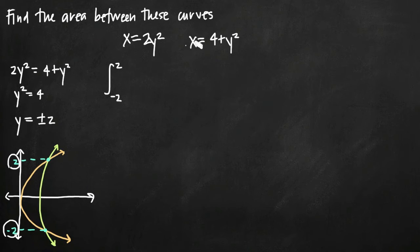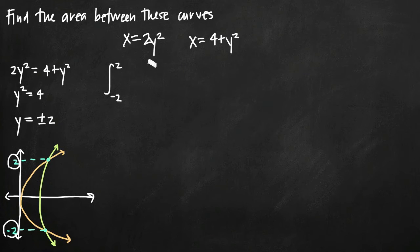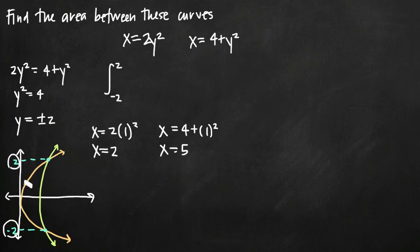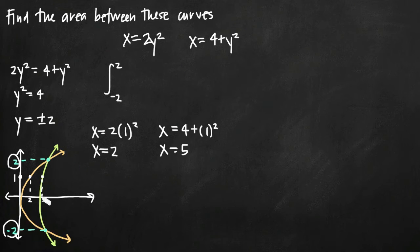We need to figure out which curve is which, and the way we'll do that is by taking any point between negative 2 and positive 2 and plugging it into both equations. Let's take positive 1 because it'll be easy. Plugging positive 1 into the first equation gives x equals 2 times 1 squared, which is x equals 2. For the other equation, plugging in 1 gives x equals 4 plus 1 squared, so x equals 5. So at y equals 1, the first curve gives x equals 2 and the second curve gives x equals 5.